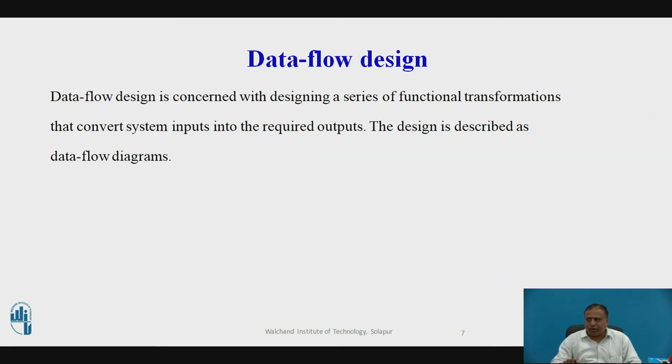Here in data flow design, data flow design is concerned with designing a series of functional transformations that convert system inputs into the required output. The design is described as the data flow diagram. This diagram shows how the data flows through the system and how the output is derived from the input through a series of functional transformations. Data flow diagrams are a useful and intuitive way of describing system. They are generally understandable without specialized training. Notably, if control information is excluded, they show end-to-end processing, that is the flow of processing from when data enters the system to where it leaves the system can be traced. Data flow design is an integral part of several design methods and most case tools support data flow diagrams creation. Different ways may use different icons to represent a data flow diagram entity but their meanings are similar.